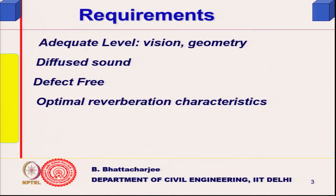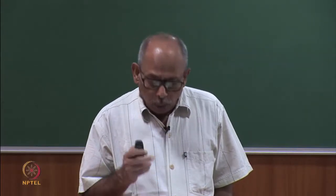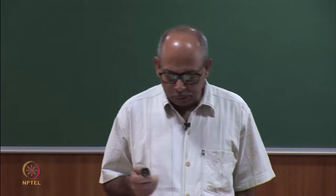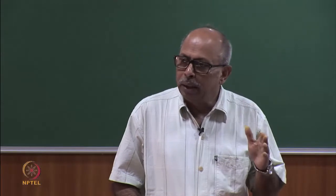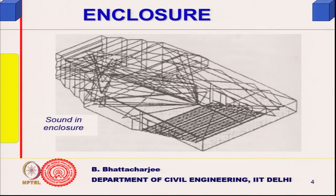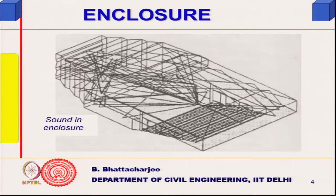To make sound diffuse, you place absorbers or reflectors in appropriate locations. Optimal reverberation characteristics relate to the formula involving S·ᾱ — absorption and related quantities. For outside noise, course insulation is used, as we have discussed. This is the enclosure scenario: you have a source on the stage, and infinite number of reflections will reach the receiver depending on their position.